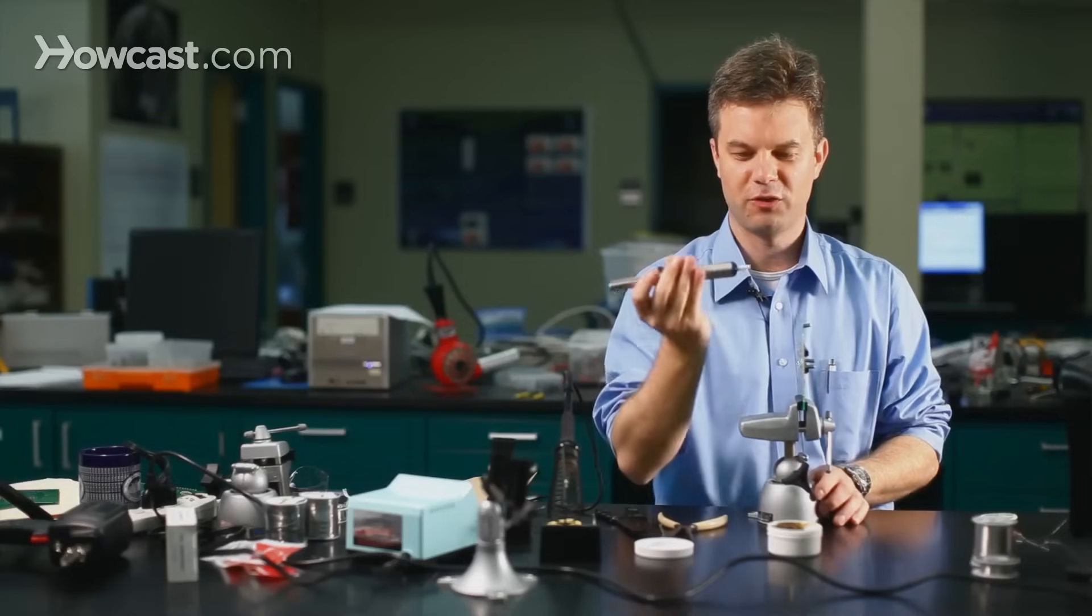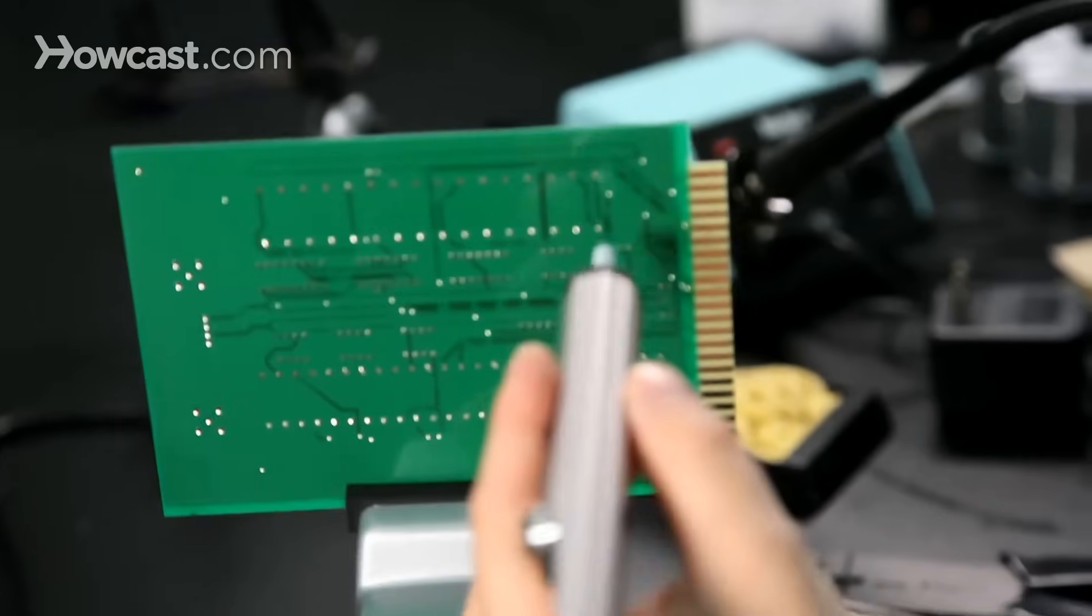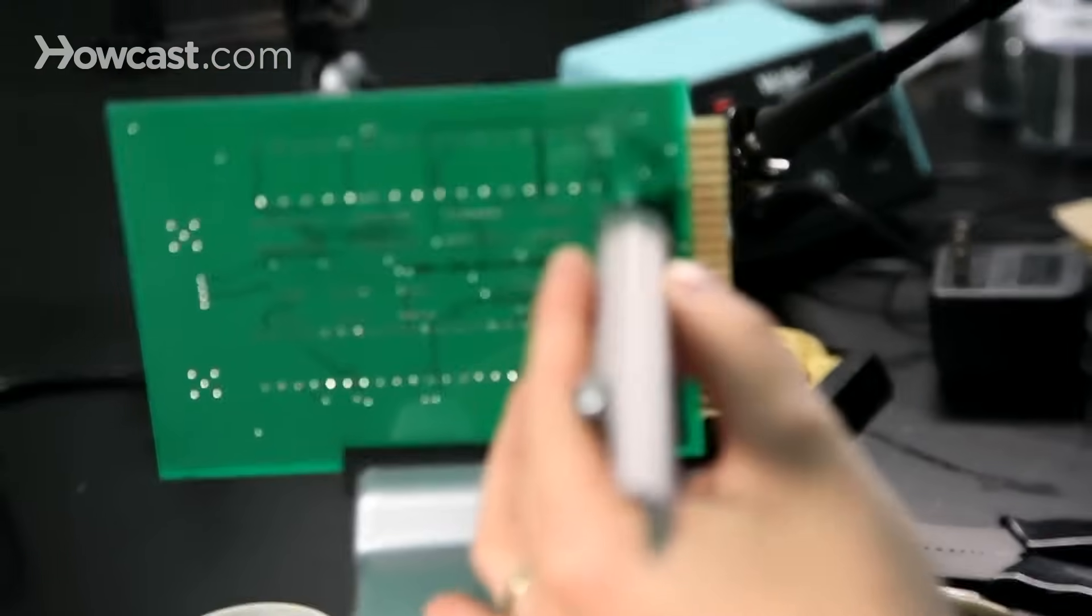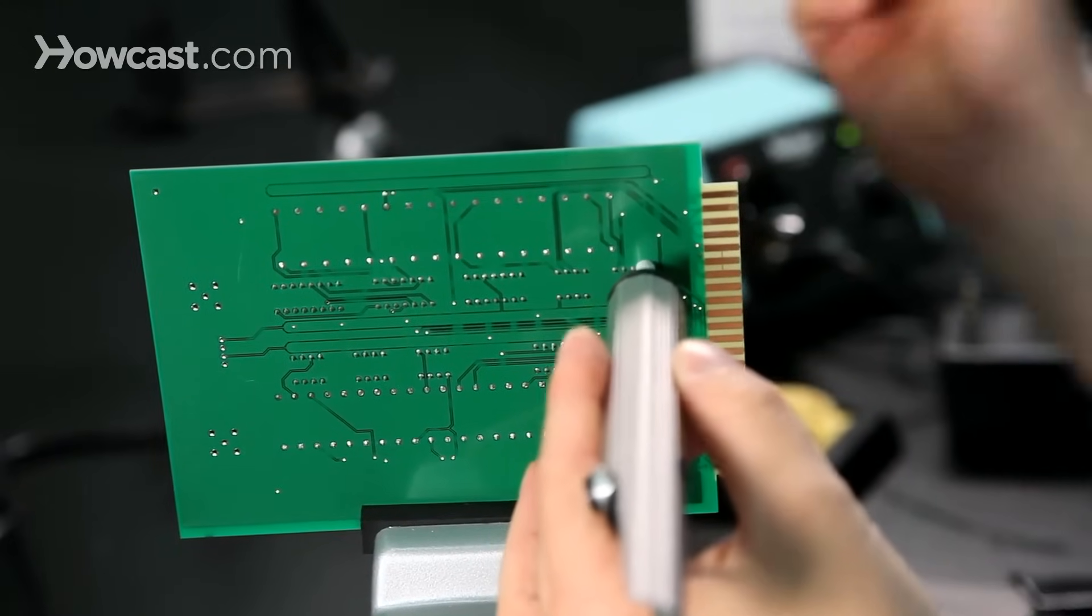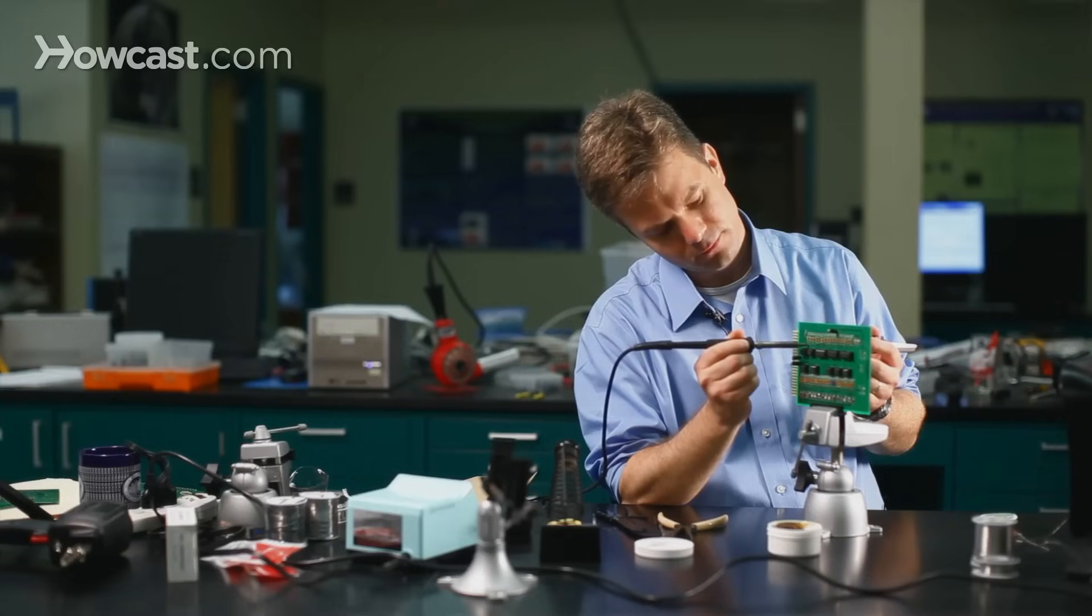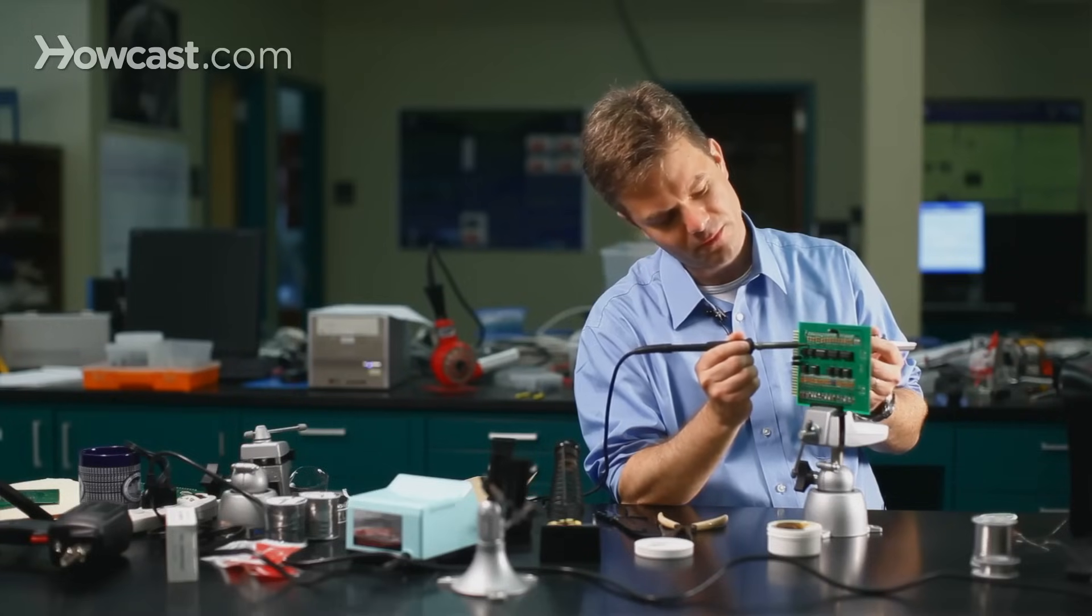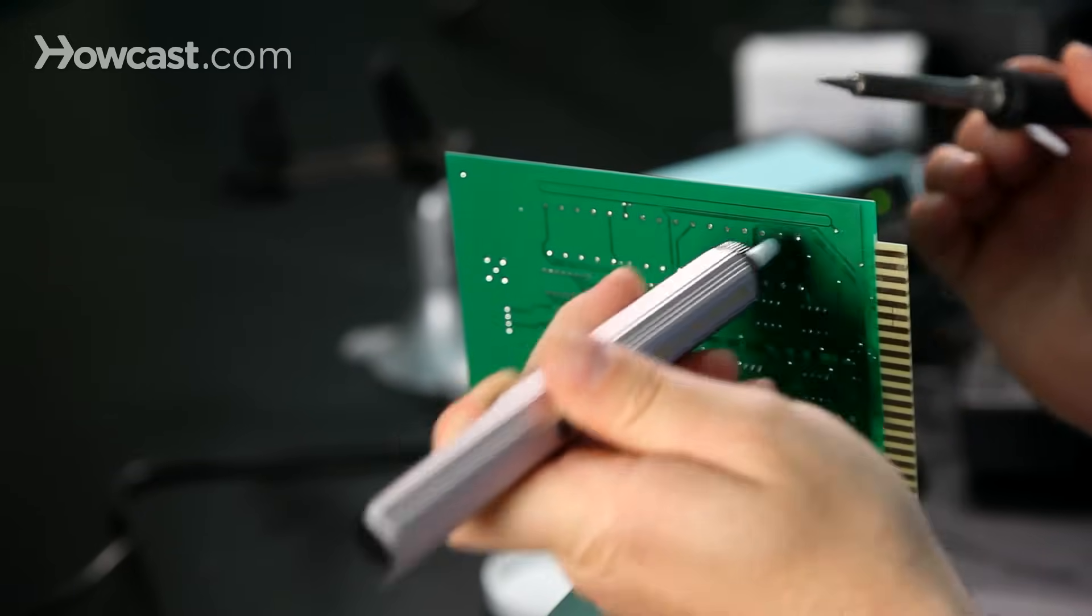So we'll work with the tool using my left hand on the back side of the board. We'll place the tip over the pin of the part that we're looking to remove, and we'll heat from the other side. Once the solder's melted, depress the trigger, and the solder's gone.